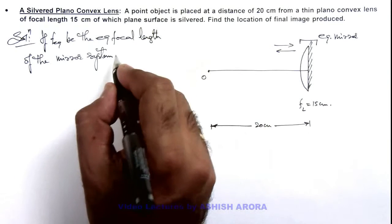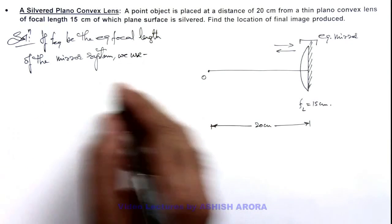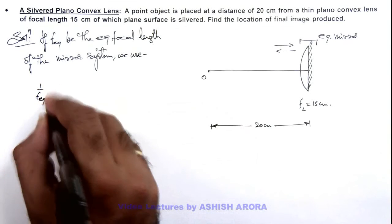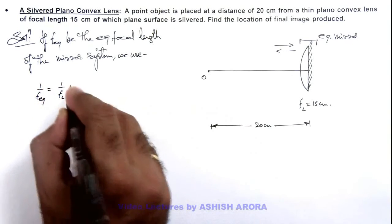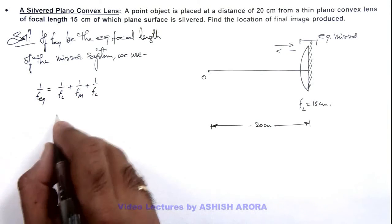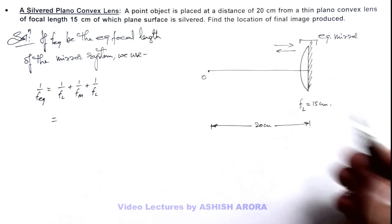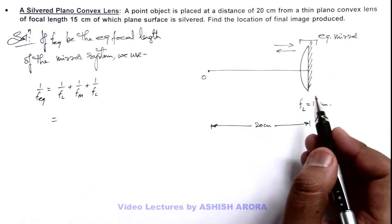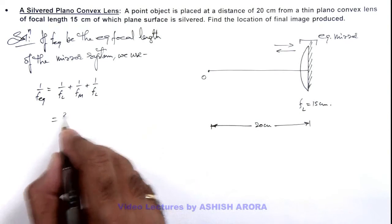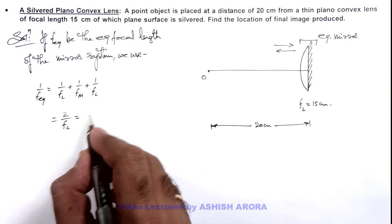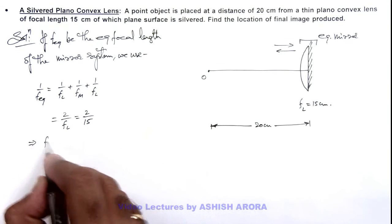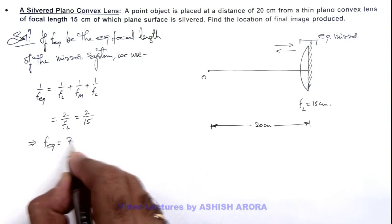So here we can use the relation of adding powers: 1/f_equivalent = 1/f_lens + 1/f_mirror + 1/f_lens. So in this situation as mirror is flat, its focal length can be taken infinity, so the middle term vanishes. So this will be 2/f_l, which will be 2 divided by 15. This implies a value of equivalent focal length here is 7.5 centimeter.